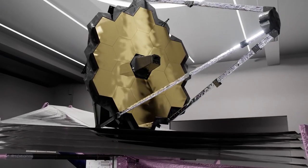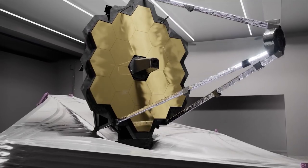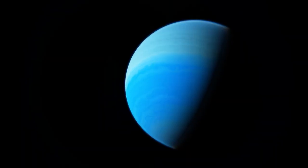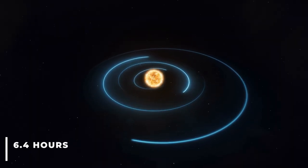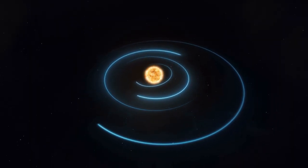On June 21, 2022, Webb's near-infrared imager and slitless spectrograph, or NIRIS, measured light from the WASP-96 system for 6.4 hours as the planet moved across the star.